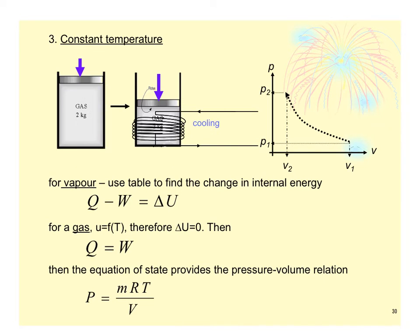Number three, you are going to have a constant temperature. In this graph it is a compression process at constant temperature, so you are going to have a pressure difference as well as your volume difference.